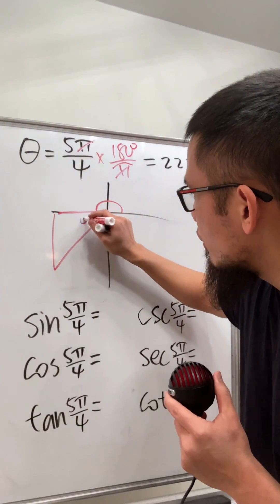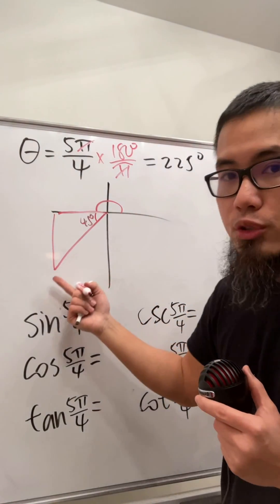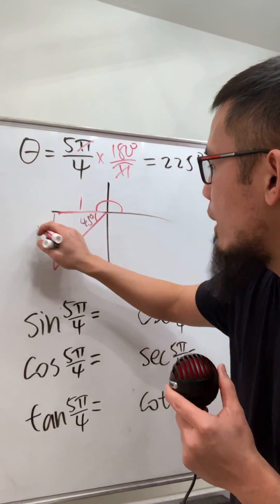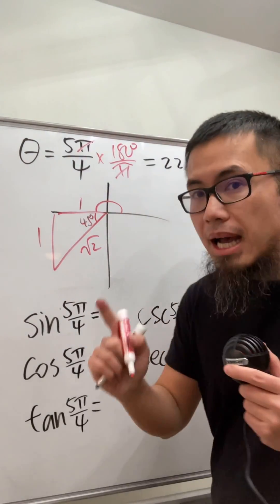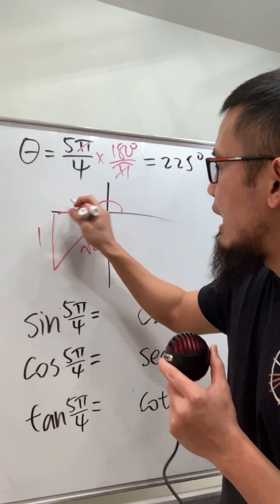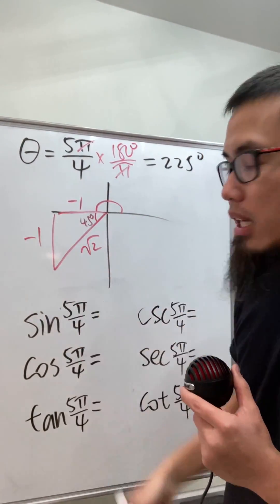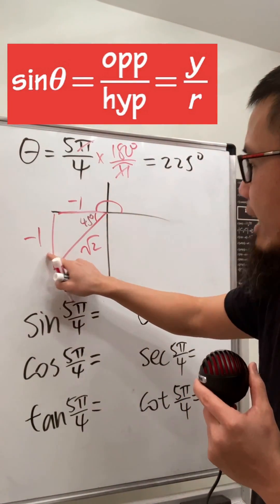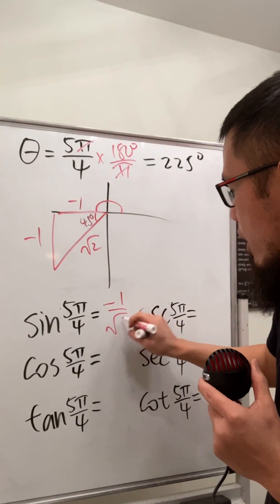We need 45 degrees more, so this is our reference angle and this is our reference triangle. The little angle here is 45 degrees, and the special triangle gives us 1, 1, square root of 2. But this is to the left so it's negative, and going down is also negative. Now sine is going to be y over r, which is negative one over square root of 2.